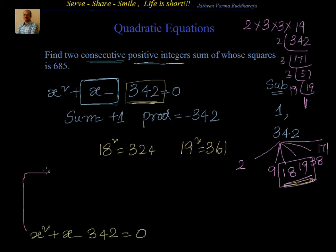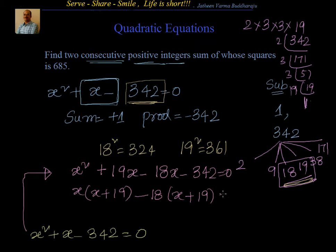Let's write down the next step. Based on that, we have x square plus 19x minus 18x minus 342 equal to 0. If I take x common, I have x into x plus 19 minus 18 into x plus 19 equal to 0. That gives me x equal to 18 or x equal to minus 19. But we will rule out this because we have been told positive integers. So x is equal to 18, and the numbers are 18 and 19.